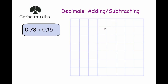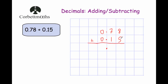Our next example is 0.78 plus 0.15. So we write 0.78 and 0.15, carefully lining them up, with the line underneath and the plus sign. We have a hundredths column, a tenths column, a units column, and we line up our decimal points — putting the decimal point in the answer beneath the others. Starting from the right: 8 plus 5 is 13 — put the 3 down, carry the 1. Then 7 plus 1 is 8, plus 1 is 9. So our answer is 0.93.